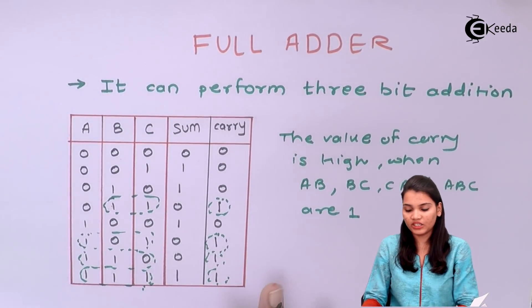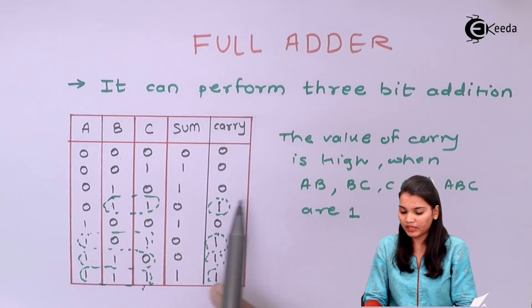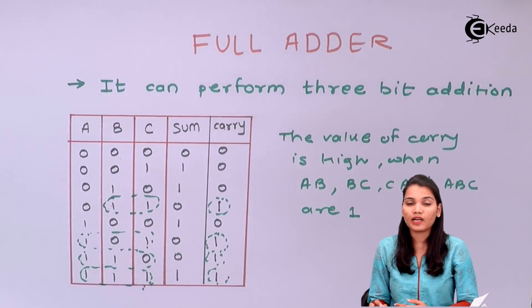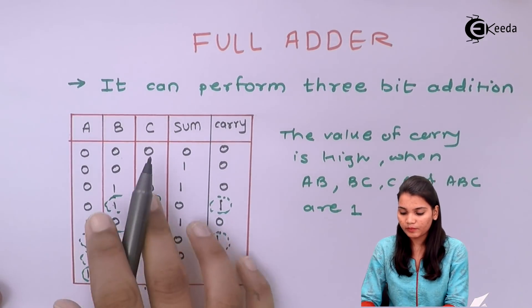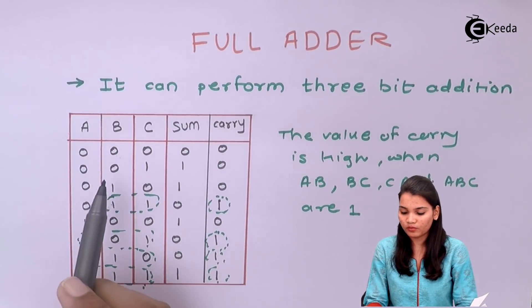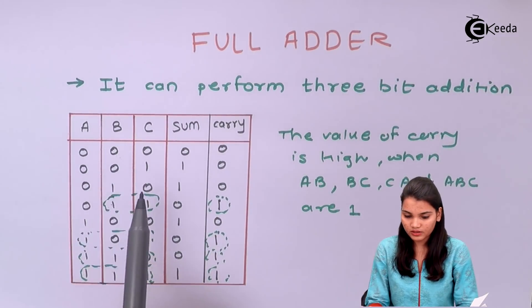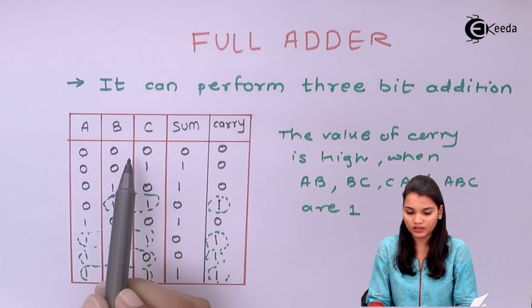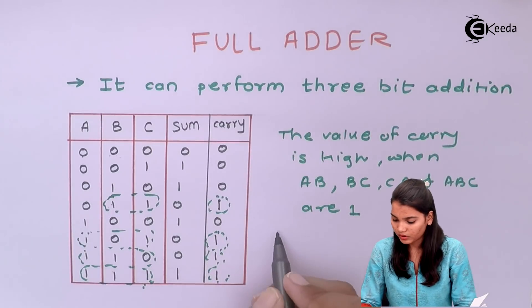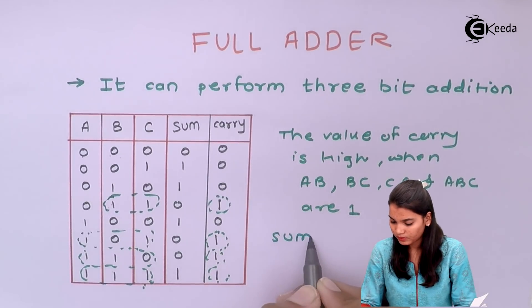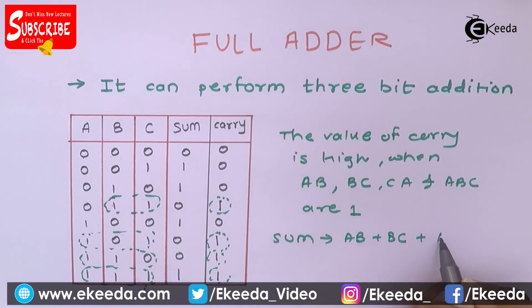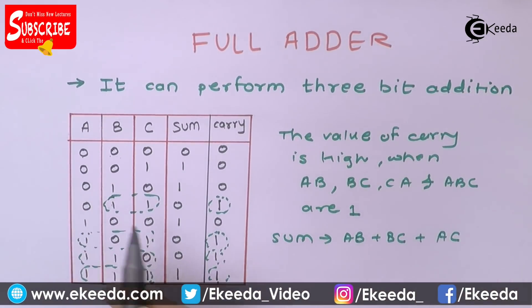We have the condition that when A·B equals one, meaning multiplication one times one, carry is one. Now for the sum: we perform the addition as A·B plus B·C plus A·C. So the sum expression is AB plus BC plus AC. Let's verify this from the truth table.